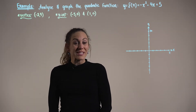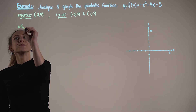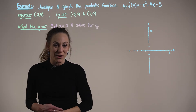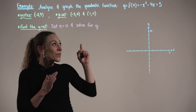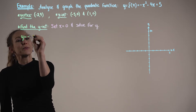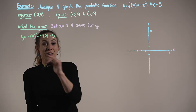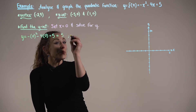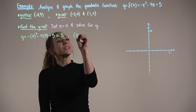Now let's find the y-intercept. To find the y-intercept, we set x = 0 and solve for y. Substituting: y = -(0)² - 4(0) + 5. The first two terms cancel out, leaving y = 5. So our y-intercept, written as an ordered pair, is (0, 5).